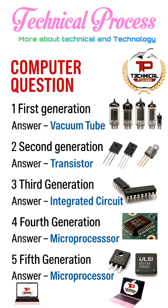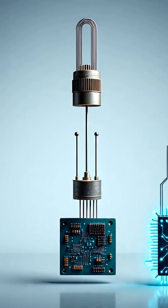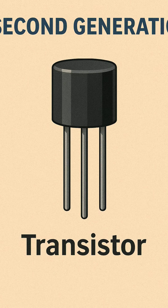Second Generation of Computers — Transistor. This generation replaced vacuum tubes with transistors, making computers smaller and faster.